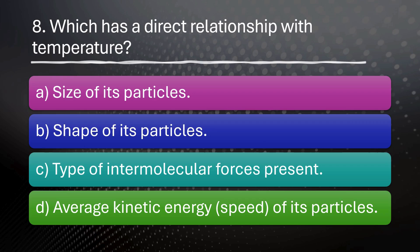Which has a direct relationship with temperature? A. Size of its particles. B. Shape of its particles. C. Type of intermolecular forces present. D. Average kinetic energy and speed of its particles.